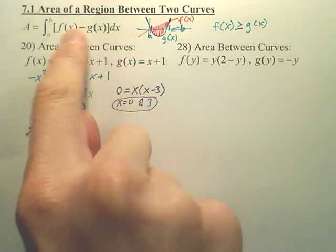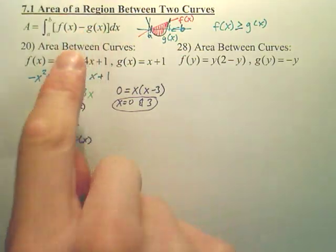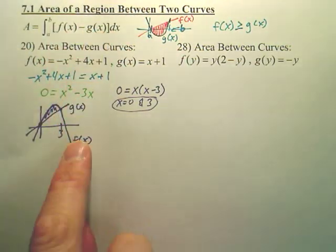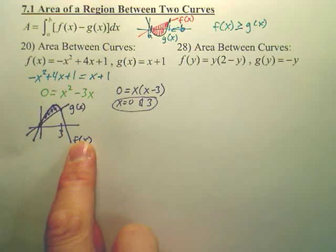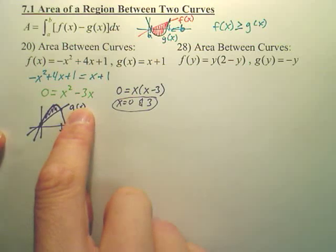When we use this formula, we're going to take f of x minus g of x, the top minus the bottom. Is f of x going to actually be f of x this time? Yes, because f of x is the parabola. It's on top. G of x is on bottom.